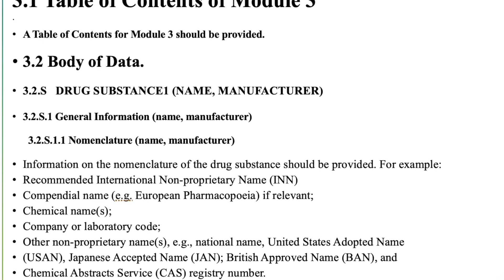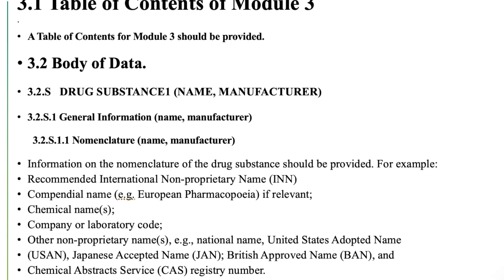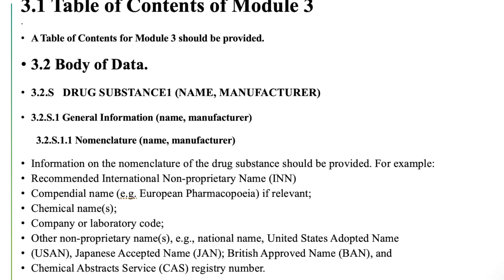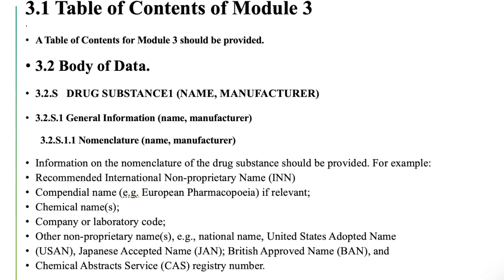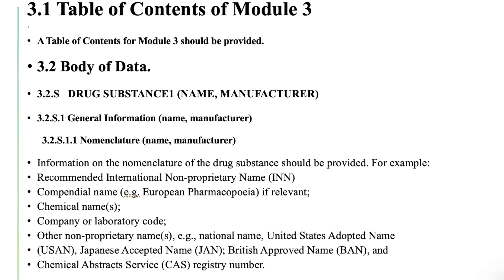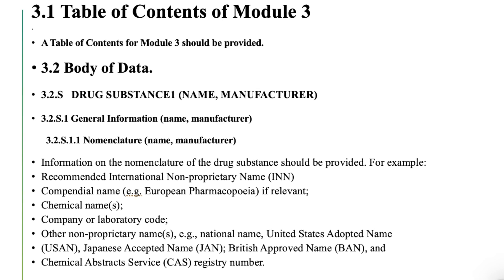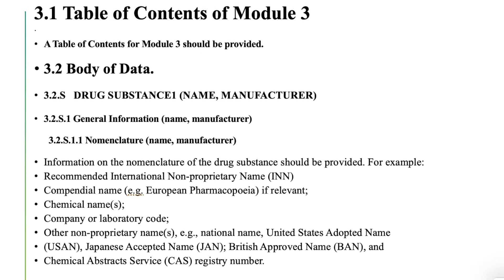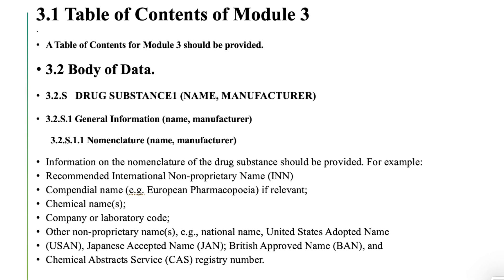3.2.S.1.1 Nomenclature (Name, Manufacturer): Information on the nomenclature of the drug substance should be provided, for example, recommended international non-proprietary name (INN), compendial name (e.g., European Pharmacopoeia) if relevant, chemical name(s), company or laboratory code, other non-proprietary names such as national name, United States Adopted Name (USAN), Japanese Accepted Name (JAN), British Approved Name (BAN), and Chemical Abstract Service (CAS) Registry Number.